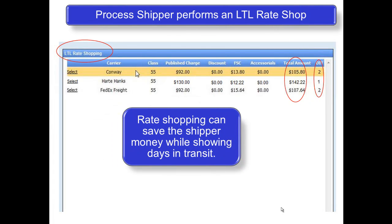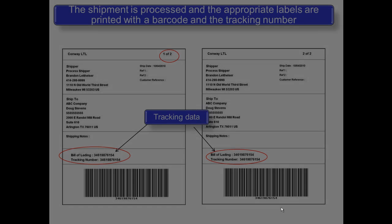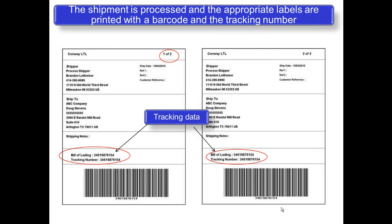At this point, the shipper can perform an LTL rate shop, providing them the carrier, the total cost, as well as days in transit. Once the shipment is processed, the appropriate skid or pallet labels are printed, complete with a barcode and a tracking number.